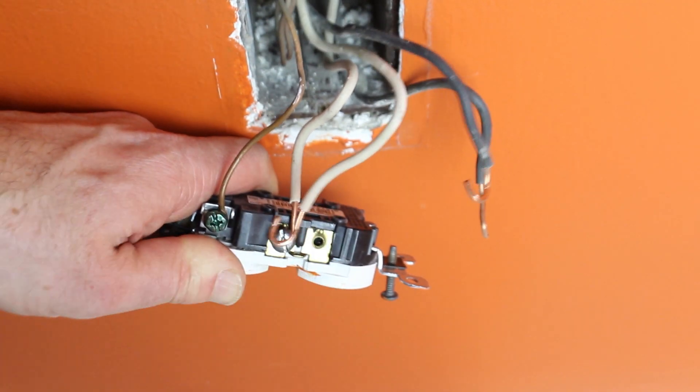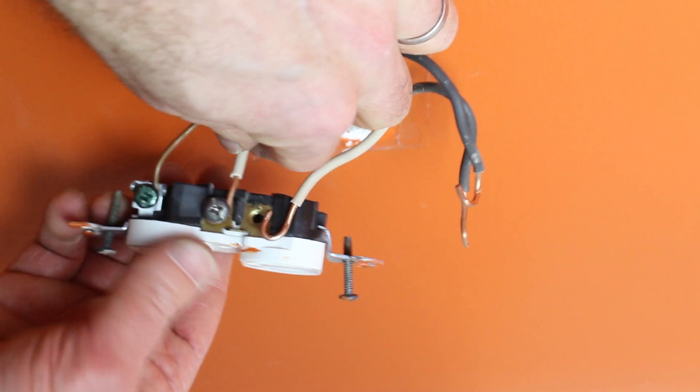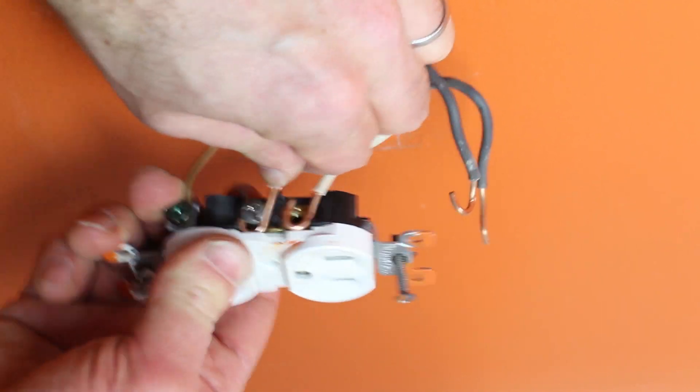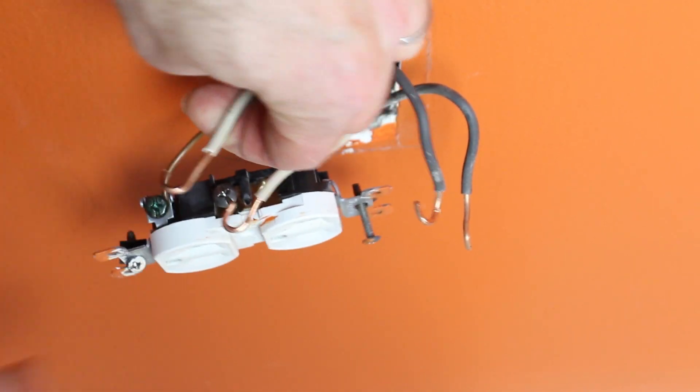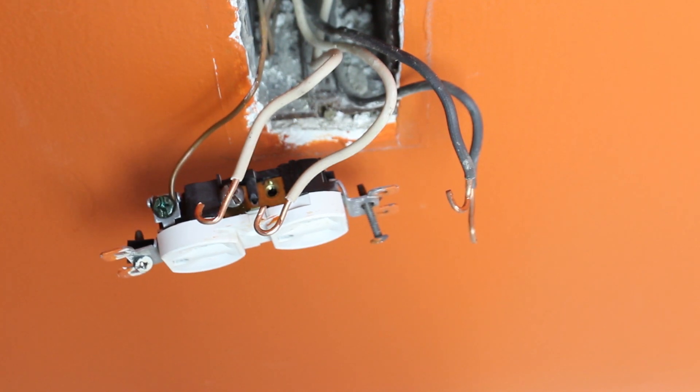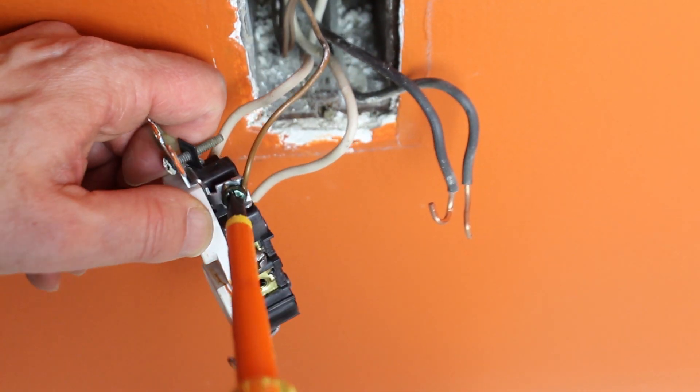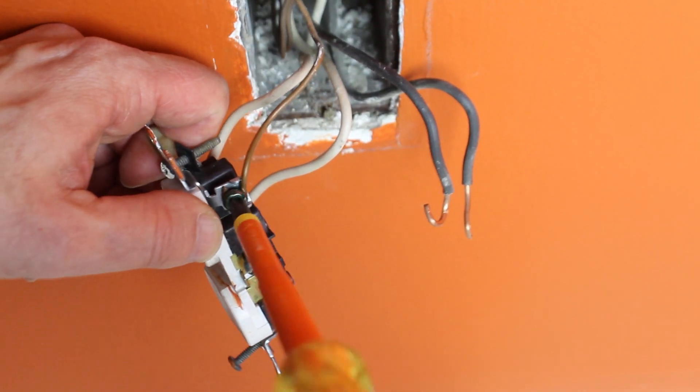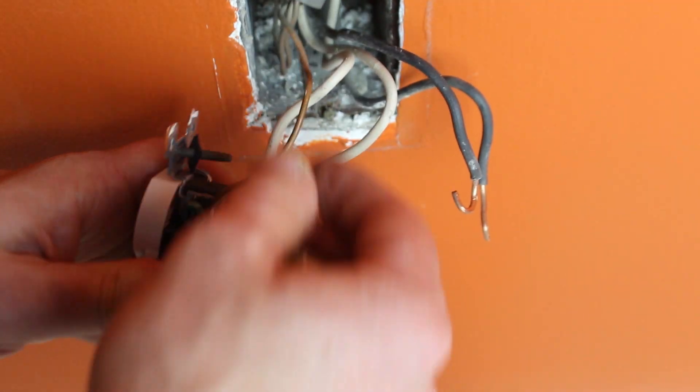Then, undo the terminal screws that hold the white neutral wires onto the outlet. And then the last thing you want to do is unwire the ground wire. Just counterclockwise, turn that screw, and then pull the ground wire off the outlet.